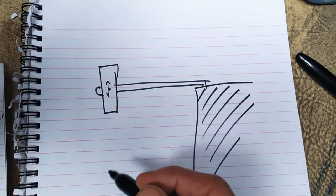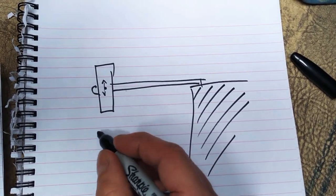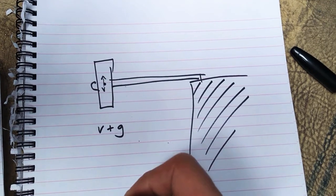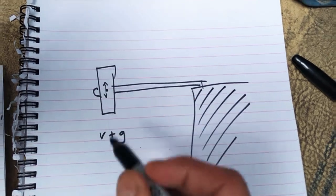As it comes down it gives us velocity plus gravity. It's coming down at velocity, it's also got gravity pulling it down. The other side goes up, we get velocity minus the effect of gravity.